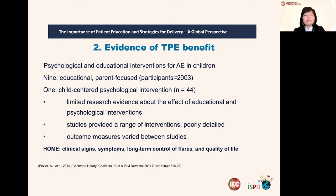Harmonizing outcome measures for eczema was really very important to establish a homogeneous concept. The HOME Initiative pointed out four key domains: clinical signs, symptoms, long-term control of flares, and quality of life as harmonizing outcome measures for eczema.